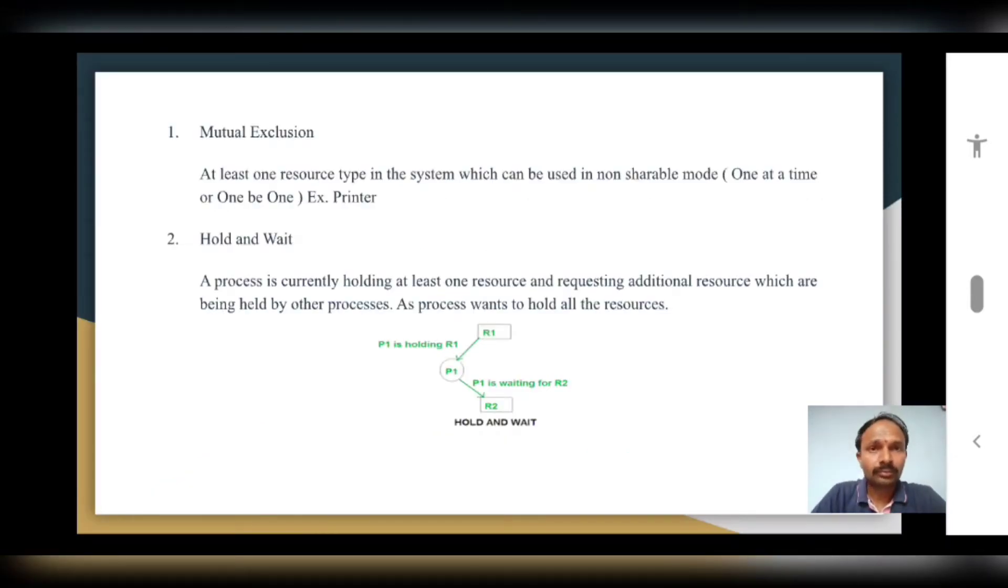Mutual exclusion. As the name indicates, every process with their own resources is independent to execute them. No sharing. It says that at least one resource type in the system can be used in non-shareable mode, means one at a time or one by one, for example, printer.